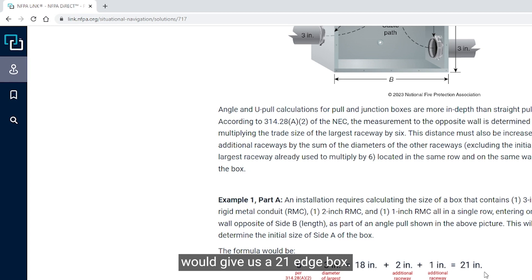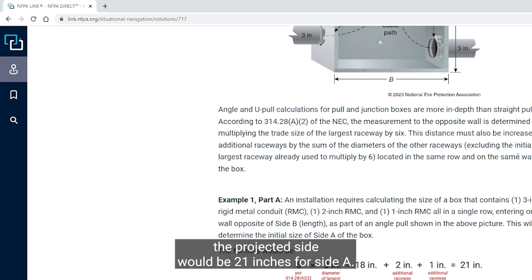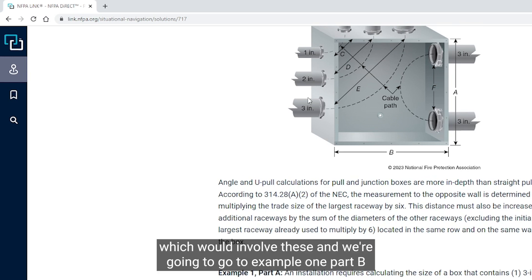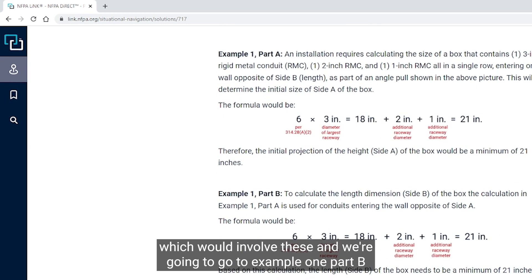So we have conduits entering in or raceways entering in opposite of B. The installation is that we have one 3-inch rigid conduit, one 2-inch rigid conduit, and one 1-inch rigid conduit all in a row entering on the same wall opposite of side B. So we are going to be solving for side A, what the length is or height.